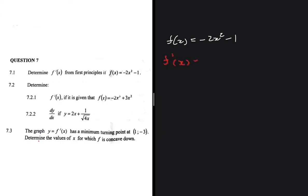What I usually do before using first principles is use the power rule, so that when I get my answer after using first principles I can see if it's correct or not. We have f(x) = -2x² - 1. If we differentiate this using the power rule we get -4x. So now we can go ahead and use first principles — we are doing question 7.1 — and if we don't get -4x as our final answer, we know we've made a mistake somewhere.